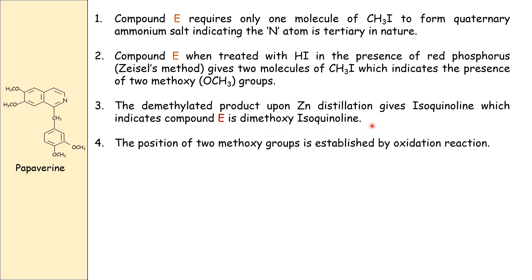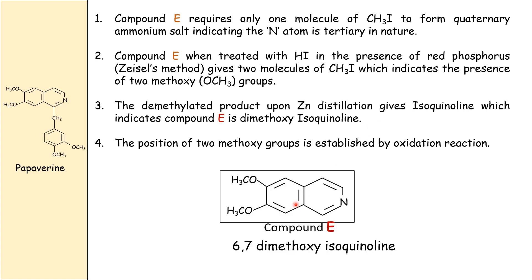Upon zinc distillation of the demethylated product, isoquinoline is obtained. All these reactions indicate that compound E is dimethoxy isoquinoline. The position of the methoxy groups is established by oxidation reaction, and compound E is identified as 6,7-dimethoxyisoquinoline. Therefore we assign the structure for compound E as 6,7-dimethoxyisoquinoline.